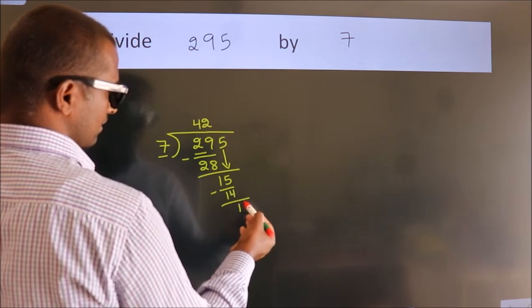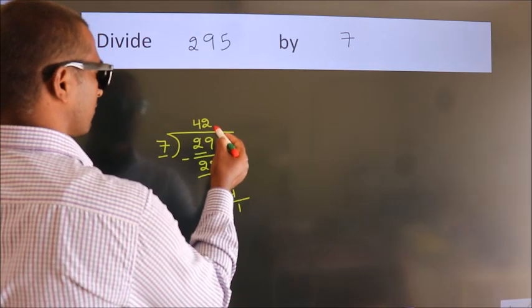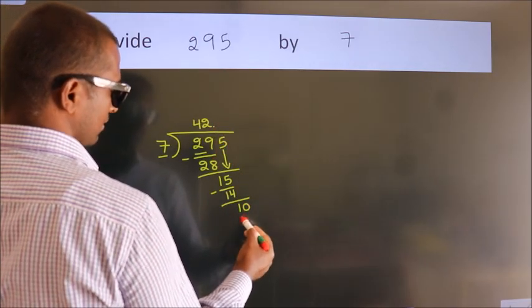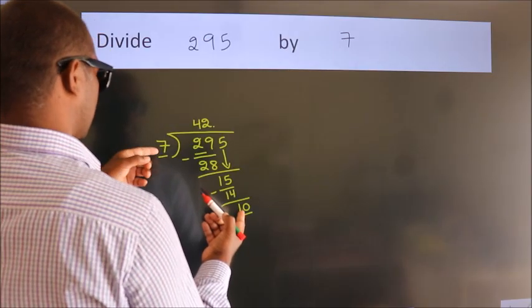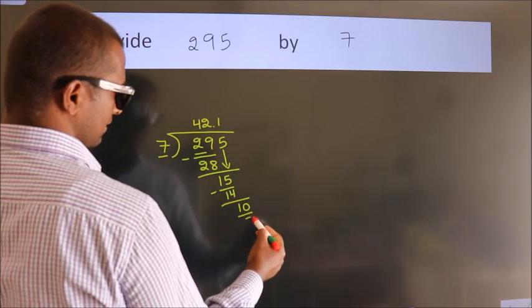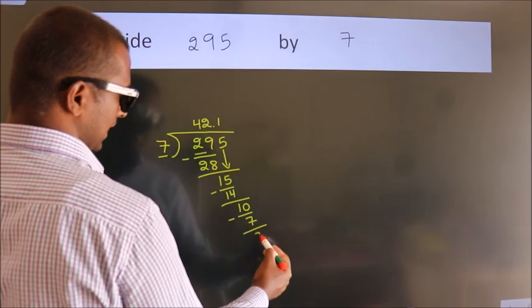After this, no more numbers to bring it down. So what we do is, we put dot, take 0. A number close to 10 in 7 table is 7 ones, 7. Now we subtract. We get 3.